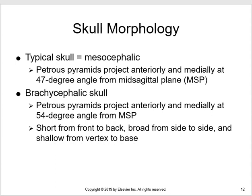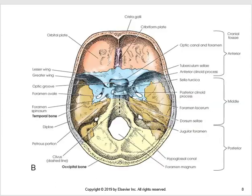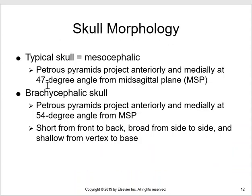Looking at an axial image, the fundamental difference between skull types and how it affects positioning is really the angulation of the petrous ridges. In an average skull, the angulation is about 47 degrees. A mesocephalic skull has about a 47-degree angle between those ridges, and that's most of your patients.